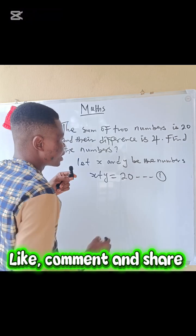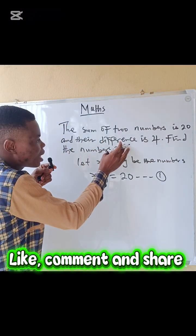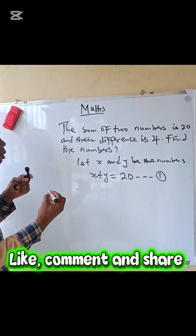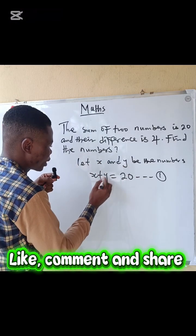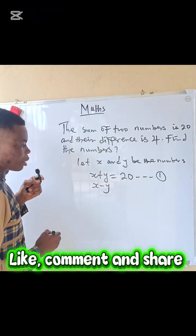The second statement is: their difference is 4. Difference here means subtraction. So we have x minus y, that is their difference, equals 4. Call this equation two.